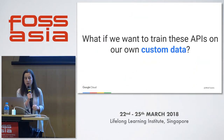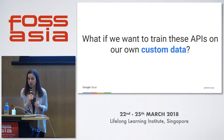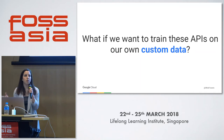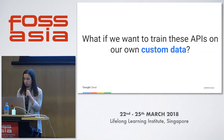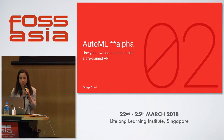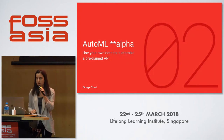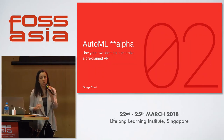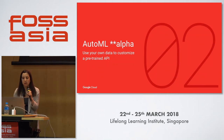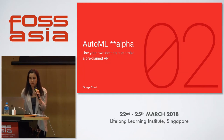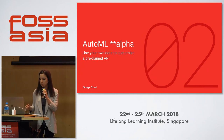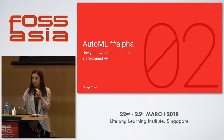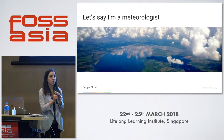A question I get a lot when presenting these APIs is: the APIs seem great, but they don't get quite specific enough to my use case. What if I want to train them on my own custom data? For that, we have a new product called AutoML, currently just available for vision. You currently need to be whitelisted to use it — I'll talk a bit more about that at the end. It lets you use your own data to customize a pre-trained API.